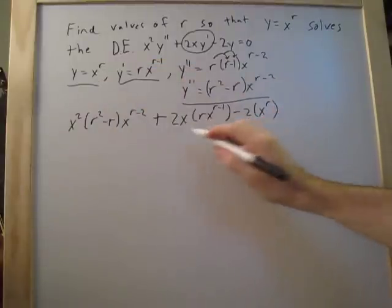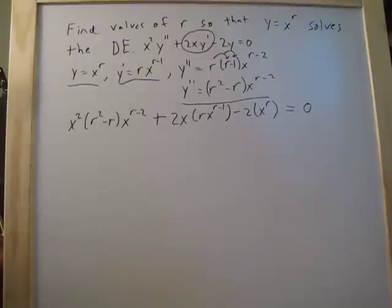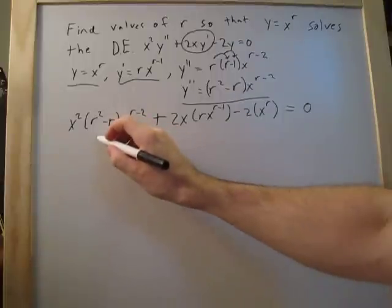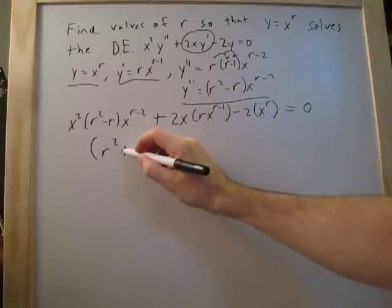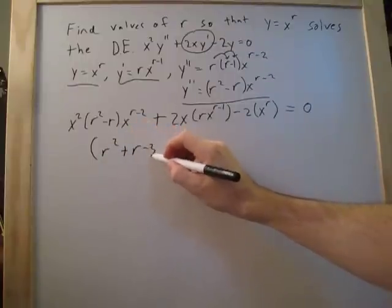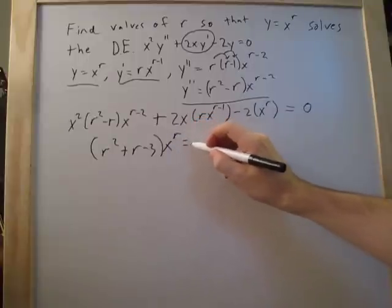Okay, so now we have this big, long equation, and that's going to equal 0. So now we just need to simplify this, and then we can reduce it down to find out what r is, which is the main goal of this. So once we simplify, we come out to r squared plus r minus 2, x to the r equals 0.